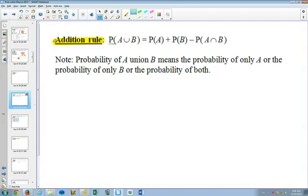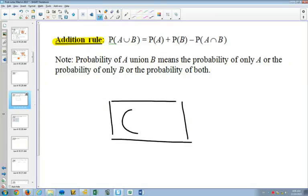So if I draw a quick Venn diagram here, and here is probability of A. And in blue, I've got a circle for B.